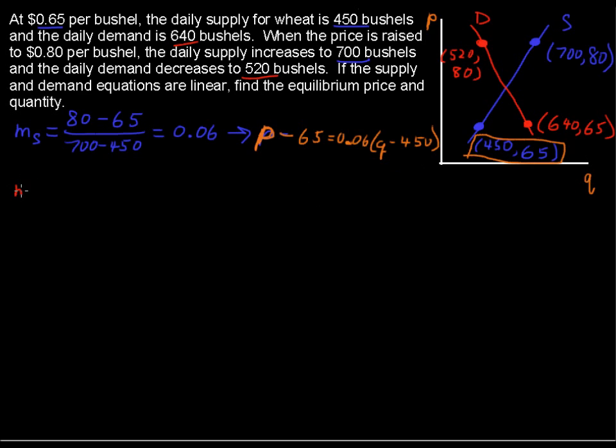Alright, moving on to the demand. The slope for the demand is going to be 80 minus 65 again, but then we have to go in the same order, 520 minus 640, to get the slope of the demand line equals negative 0.125.